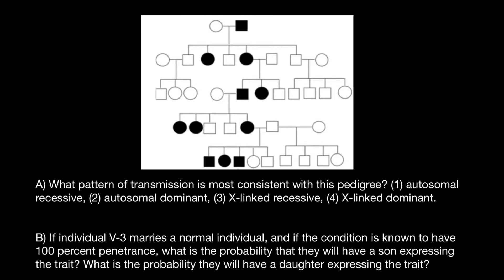From what we see, it seems like this is X-linked dominant. For example, a male in the first generation has a defective X chromosome. I will show it with red color, and a normal Y chromosome.